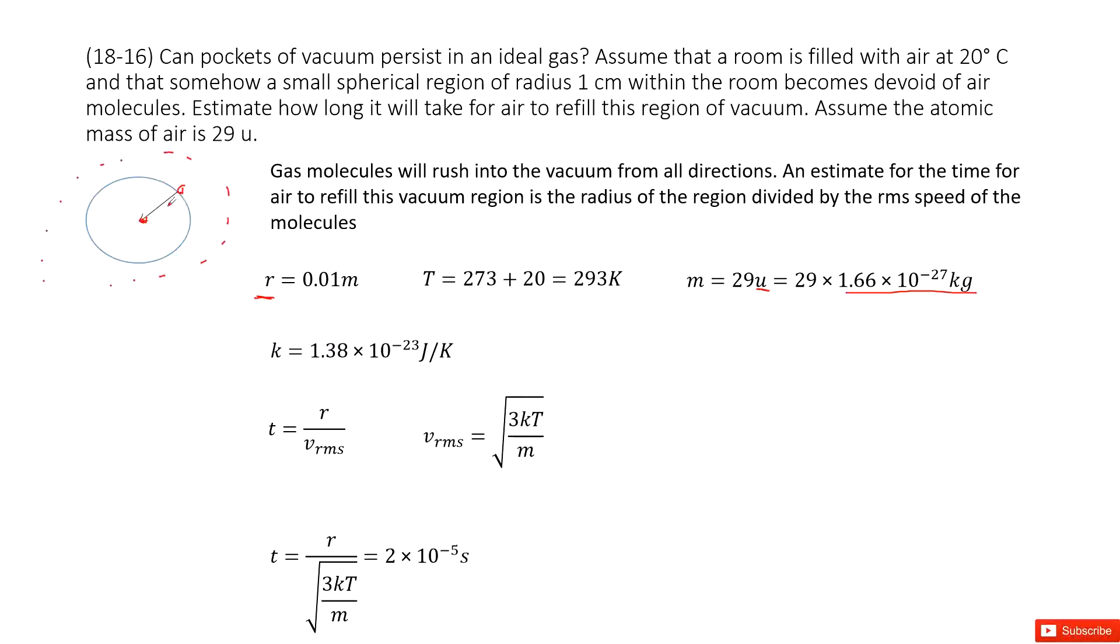And the speed this air molecule traveled, we can consider it as V_RMS, RMS speed. So the time T is R divided by V_RMS. You can see R is given. So next step, we need to find this root mean square speed.